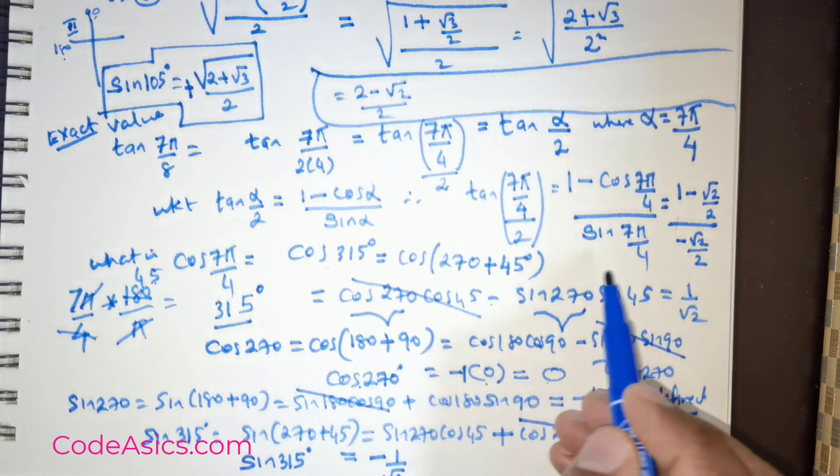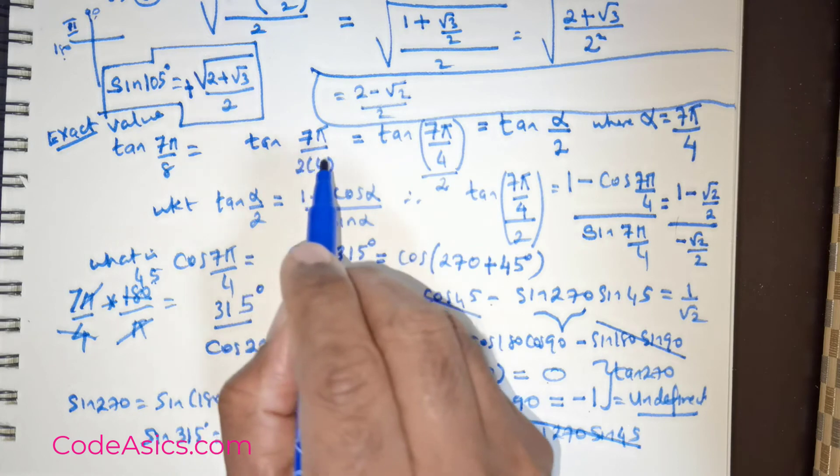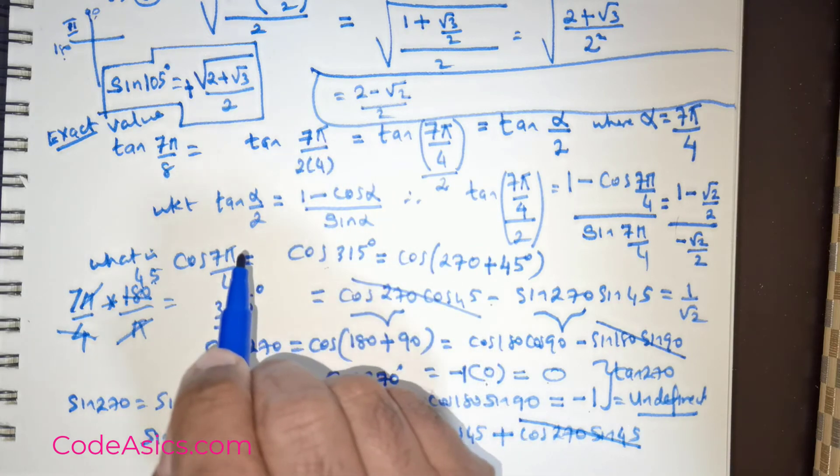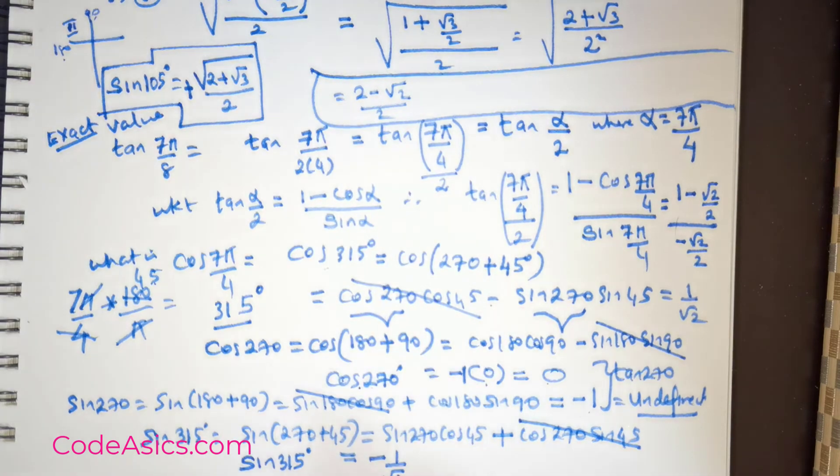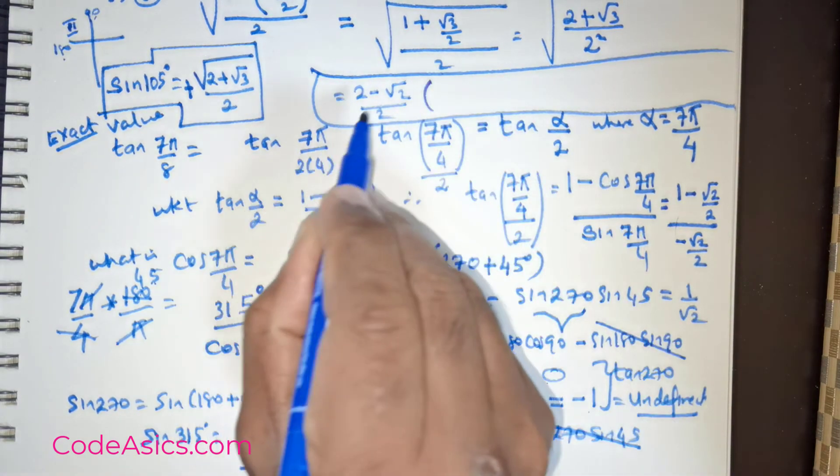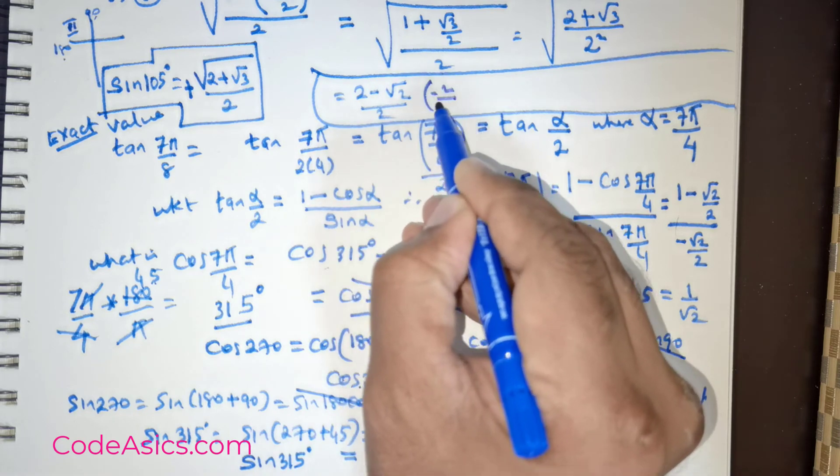This is for the numerator. And for the denominator, if I were to flip it, this is going to give me the following. So if I were to flip this quantity, this is going to be negative 2 over root of 2.